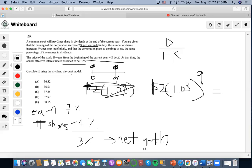We're going to get 2.60. Now once we get that growth rate from the net growth, based on the fact that the price of the stock 10 years from the beginning of the current year will be X.